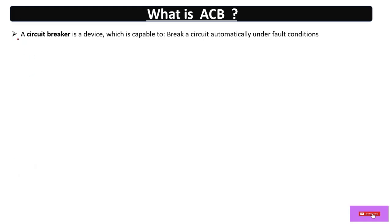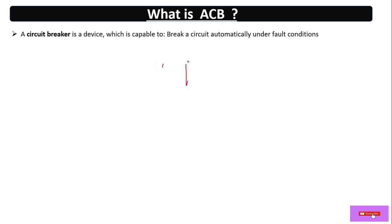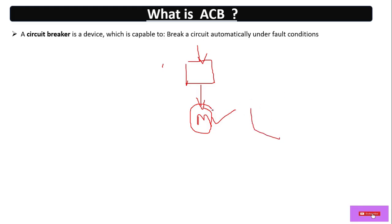A circuit breaker is a device which is capable to break a circuit automatically under fault conditions. Here, let's say this is the circuit breaker — this is the incoming and this is the outgoing, and here is the motor. In case of a fault in the motor, such as a short circuit, it will break the circuit during the short circuit fault event.